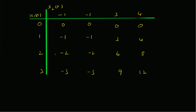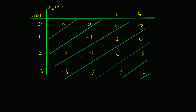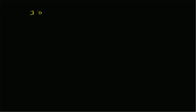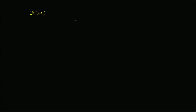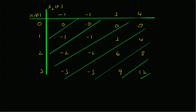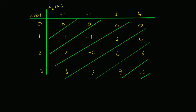To find the convolution sequence x(n), we draw diagonals across this table and sum the elements along each diagonal. For example, x(0) is the sum along the first diagonal — only one element, which is 0 — so x(0) = 0. Then x(1) is the sum along the second diagonal: 0 + (-1) = -1.